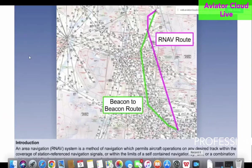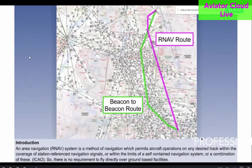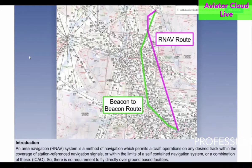So what is area navigation? It is a method of navigation which permits aircraft operations on any desired track within the coverage of station-referenced navigation signal.